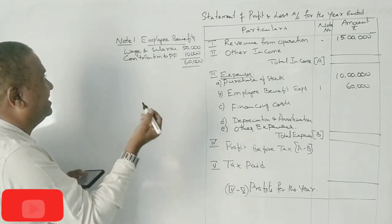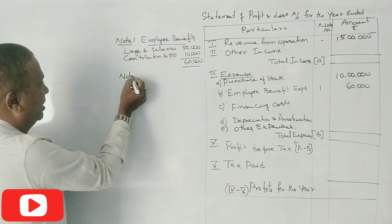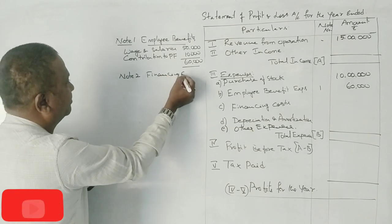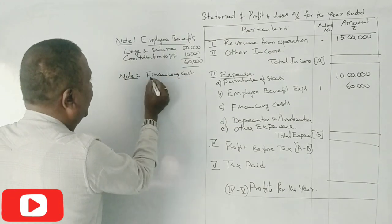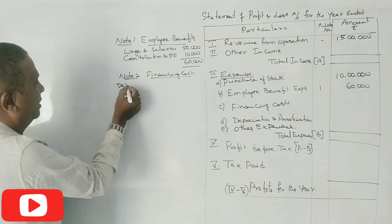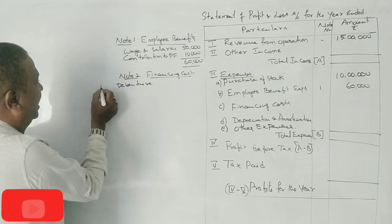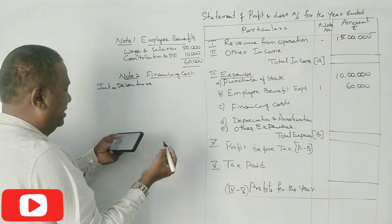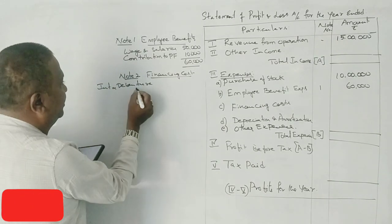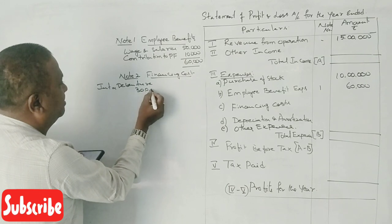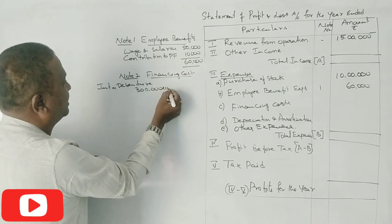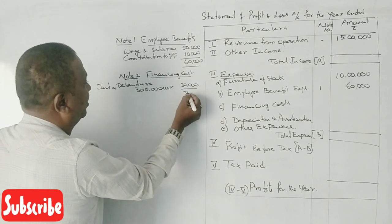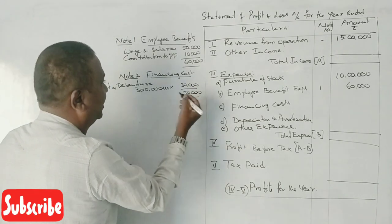Next item: financing cost — Note number 2. What is the financing cost? The debenture is 10% debentures, so we calculate interest on debentures. The debenture amount is 3,00,000 rupees. 10% of 3,00,000 is 30,000 rupees. So the financing cost is 30,000 rupees.